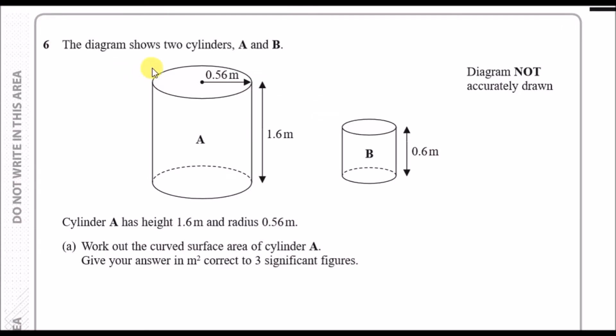Okay, question six. The diagram shows two cylinders A and B. Cylinder A has a height of 1.6 meters and radius 0.56 meters. Cylinder B has a height of 0.6 meters and radius we don't know, so let's call it r. Work out the surface area of cylinder A.